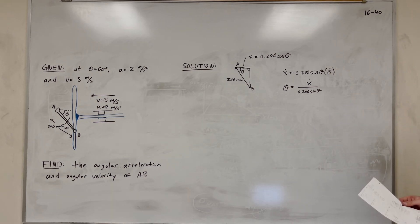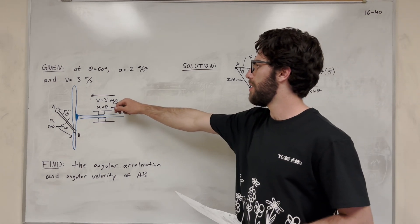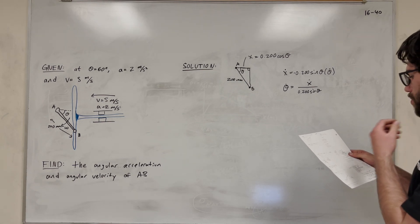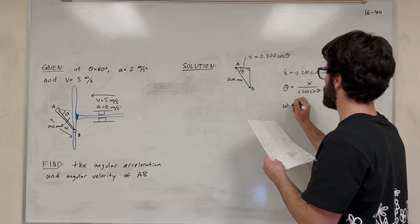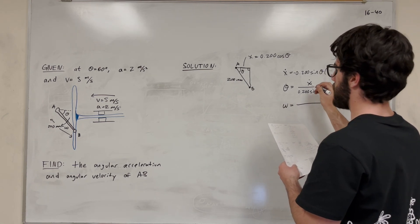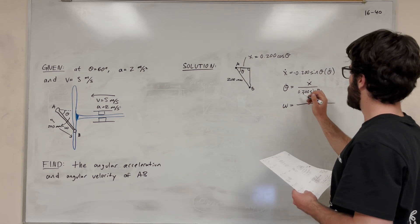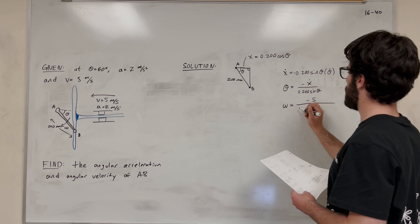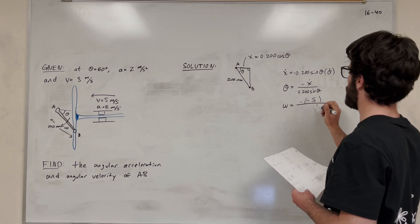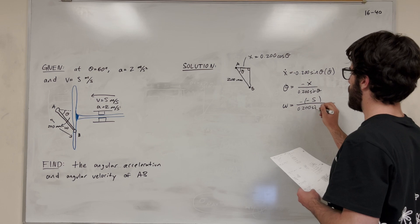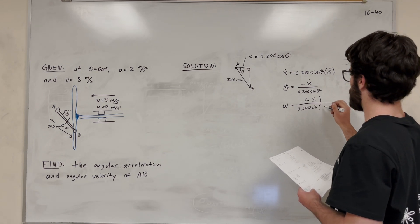So this is going to be equal to x dot over 0.200 sine of theta. And so we know what x dot is. x dot is velocity. So now we just need to plug in our numbers. All right, so let's plug in. So x dot is equal to 5 meters a second. Let's put negative 5 because it's going left. And I forgot the negative here, so the negatives are going to cancel out. And that's going to be 0.200 sine of 60 degrees.